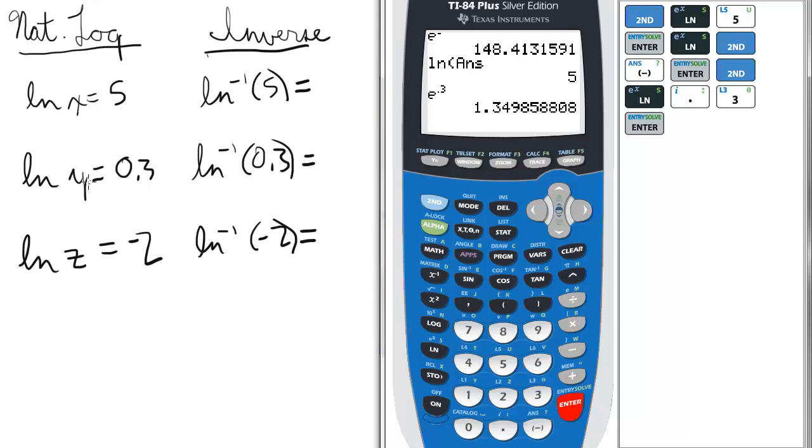That is our y value here. Lastly, ln of z equals negative 2 in the inverse natural log format, ln negative 1 of negative 2.